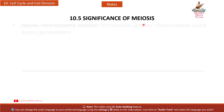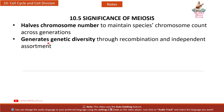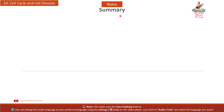10.5 Significance of Meiosis: Halves chromosome number to maintain the species' chromosome count across generations. Generates genetic diversity through recombination and independent assortment. Drives evolutionary adaptability by creating new allele combinations.